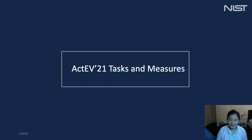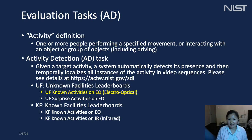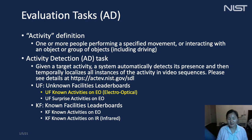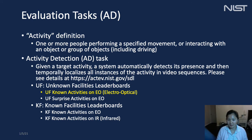Activity in this evaluation is defined as one or more people performing a specified movement or interacting with an object or group of objects, which includes driving and flying in this context. We address the activity detection task: given a target activity, a system automatically detects its occurrence and temporally localizes all occurrences of the activity in video sequences. For ACTIV-21 SDL, we have two leaderboards with sub-leaderboards. Our primary focus in this talk is the unknown facilities with known activities on the EO camera.